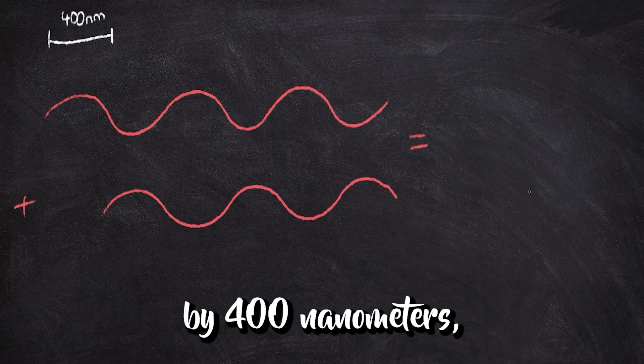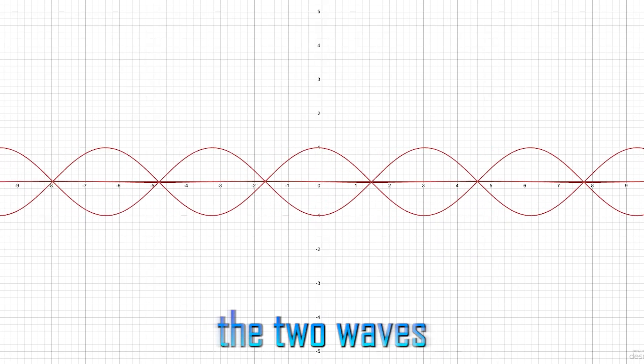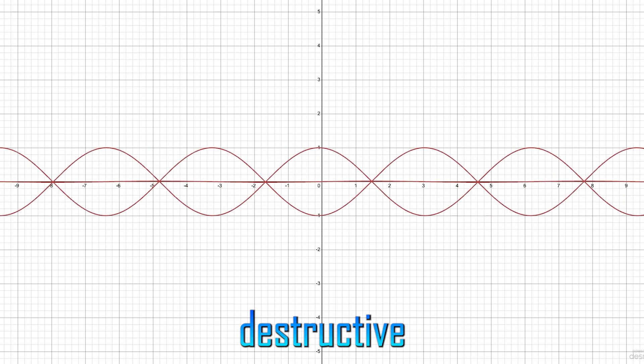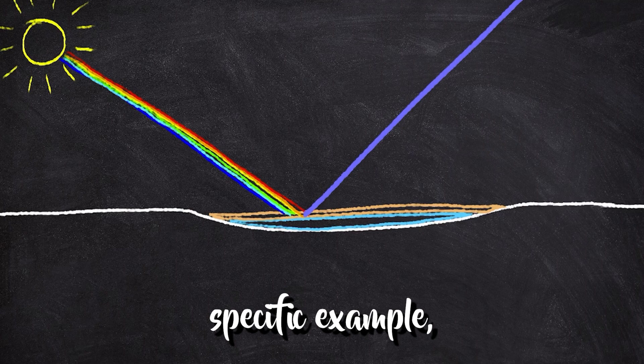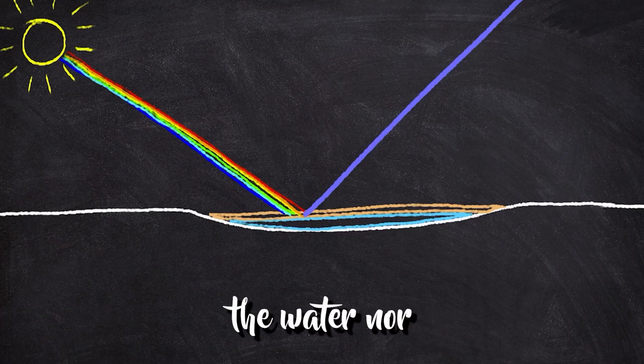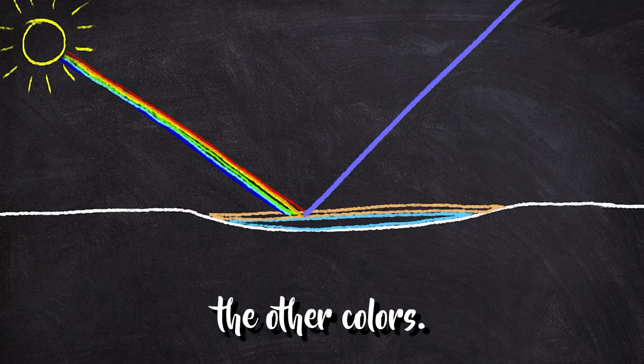But when you offset the red light by 400 nanometers, you offset it by exactly half its wavelength. So when the waves recombine, the two waves are now directly opposing each other, so they add to zero. This is called destructive interference. So in this specific example, the puddle will actually appear blue. Even though neither the water nor the oil is blue, blue light is reflected at a higher amplitude than all the other colors.